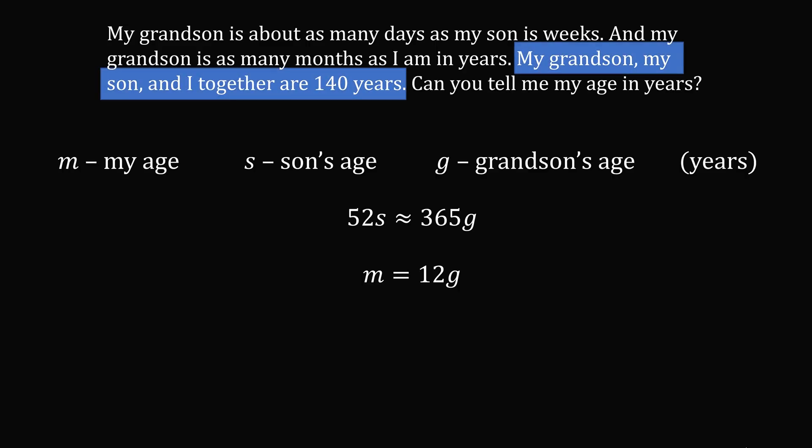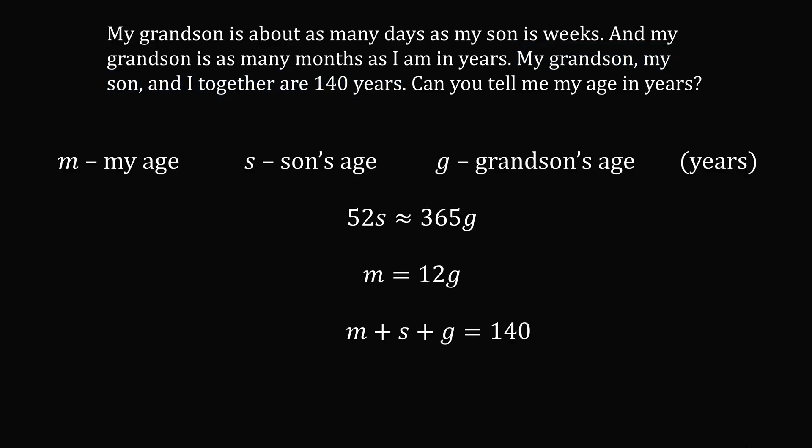My grandson, my son, and I together are 140 years. So the sum of m, s, and g is equal to 140. The objective of the problem is to tell me my age in years, so we want to solve ultimately for the variable m.